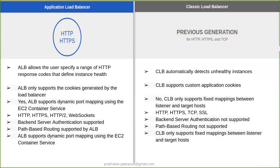But coming to the Classic Load Balancer, it automatically detects unhealthy instances with the help of EC2 instance availability. Application Load Balancer works only for HTTP and HTTPS protocols, while the Classic Load Balancer works for HTTP, HTTPS, as well as TCP protocols. Application Load Balancer only supports cookies generated by the load balancer, with no application cookies in between. But Classic Load Balancer supports custom application cookies.